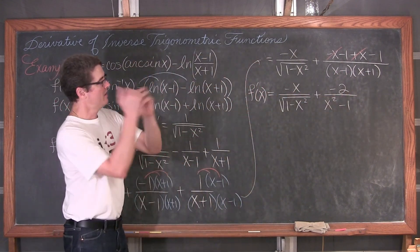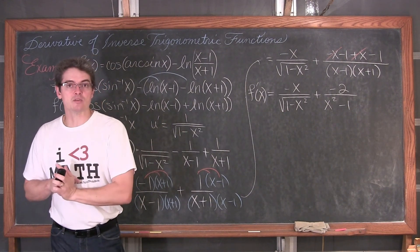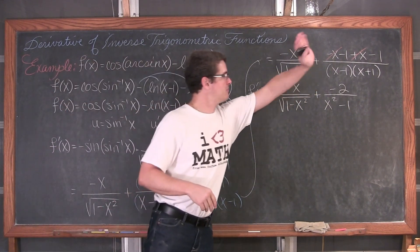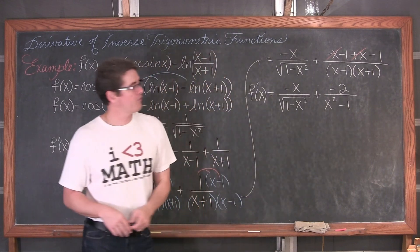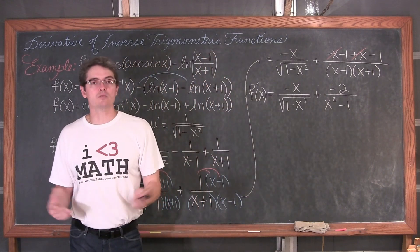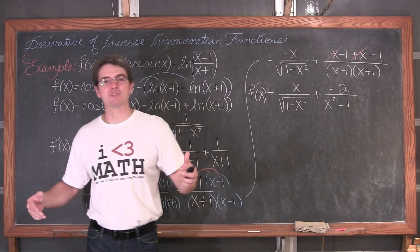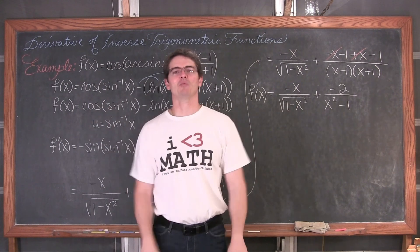So our final answer is negative x over the square root of 1 minus x squared, plus negative 2 over x squared minus 1. And that is it for the last example. I am Mr. Tarrou. Go do your homework!